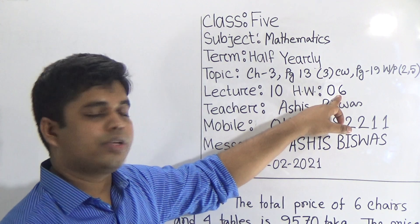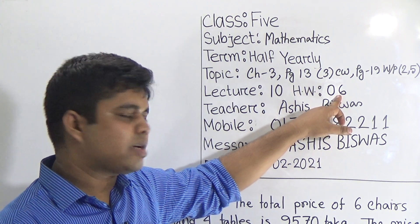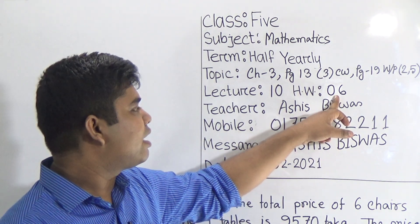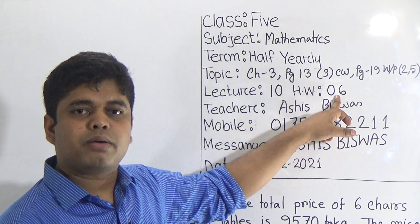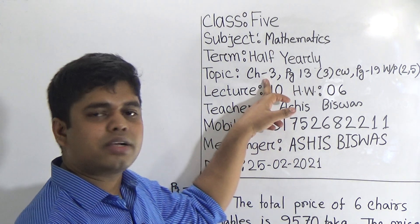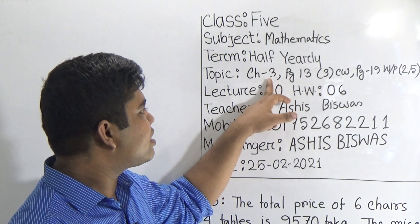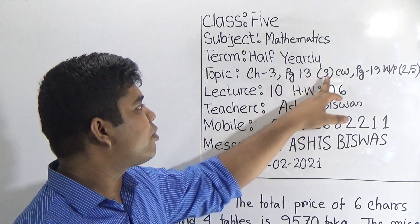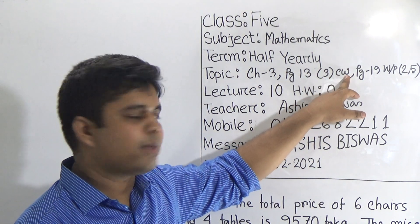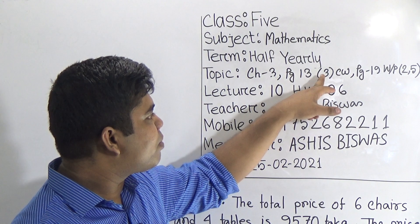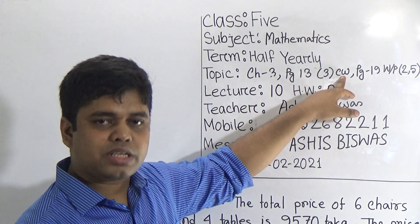My dear students, when you do your SW, you must give your SW number at the left corner of the page. So our today's topic is chapter 3. From page number 13, we shall solve question number 3 as your SW.